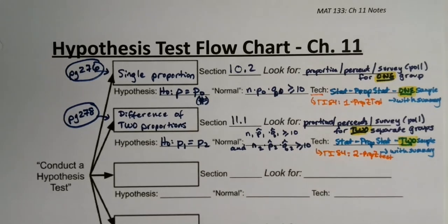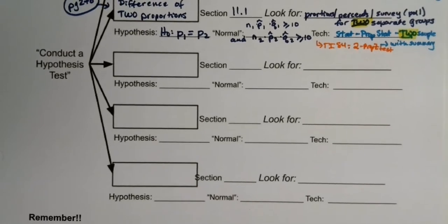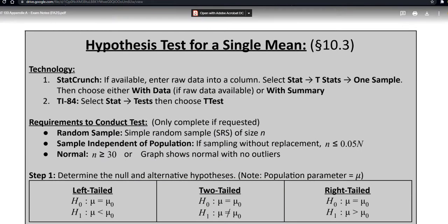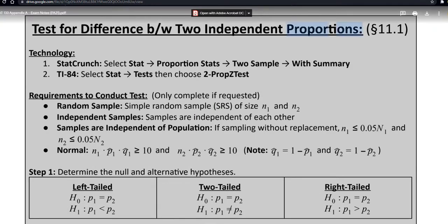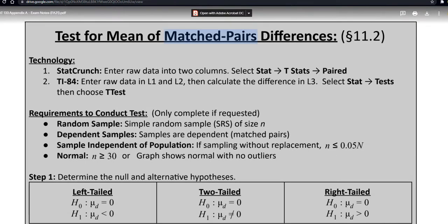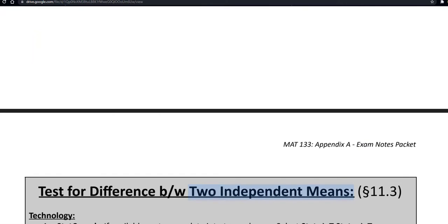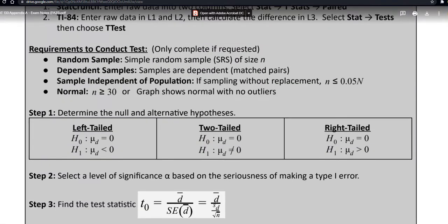Now we have to think about the mean tests — they're a bit more involved. There are three different mean tests: the single mean test from chapter 10 section 10.3 on page 277, the matched pairs test, and the difference between two independent means, both from chapter 11.